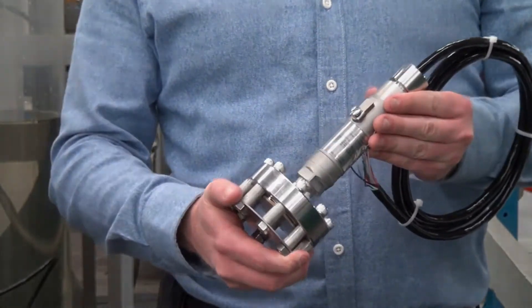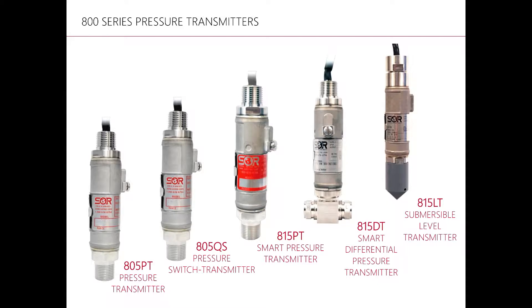Today we are going to be talking about the 815LT Submersible Level Transmitter. The 815LT is a continuation of the 800 series pressure transmitter family.